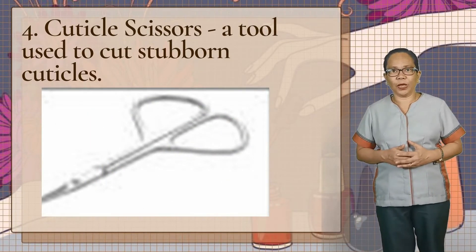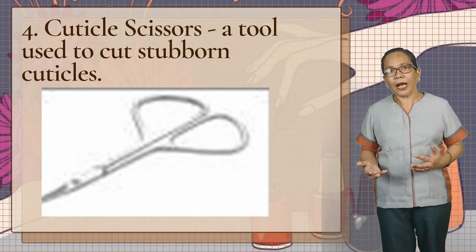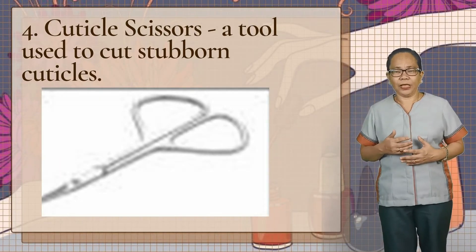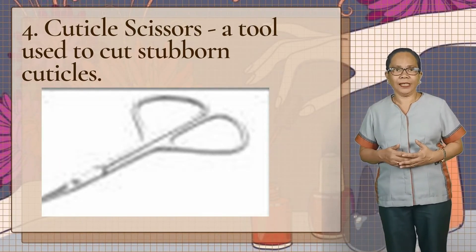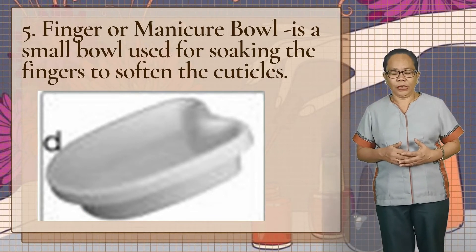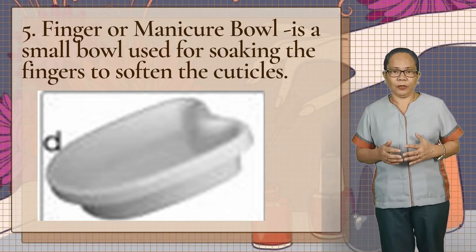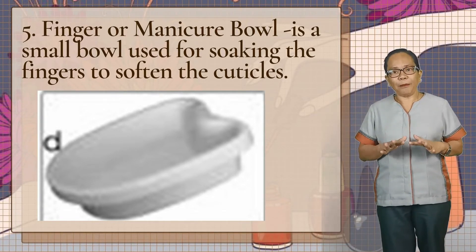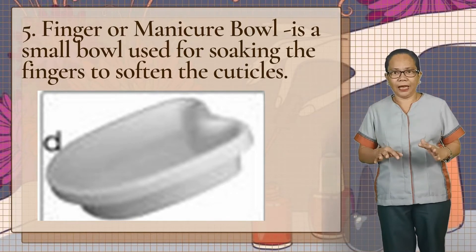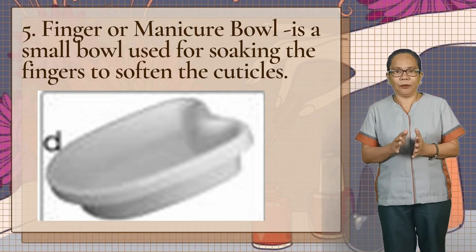Next we have the cuticle scissors, a tool used to cut cuticles — yung hindi pwedeng makuha ng cuticle nipper, cuticle scissors ang ginagamit. Next we have the finger or manicure bowl, a small bowl used for soaking the fingers to soften the cuticle — para malambot o madaling matanggal ang cuticle ng ating daliri. Kailangan muna nating ibabad ito sa finger or manicure bowl.